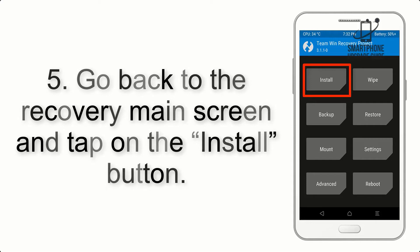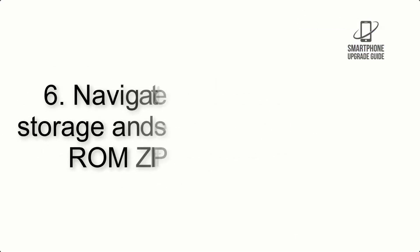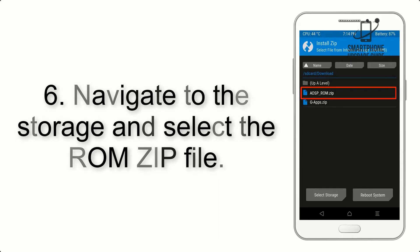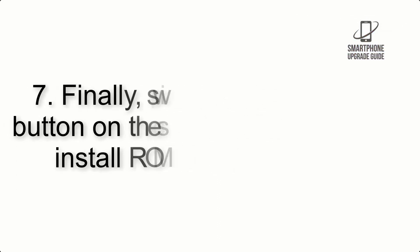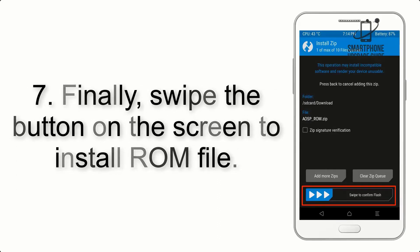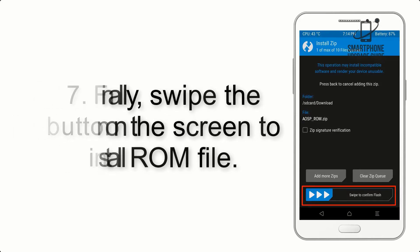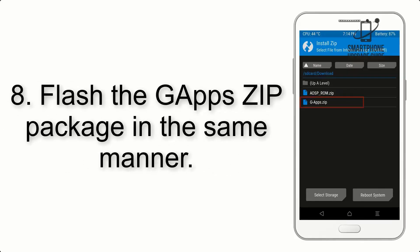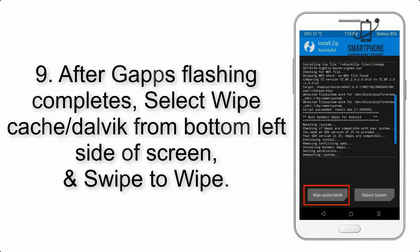Step 5: Go back to the recovery main screen and tap on the Install button. Step 6: Navigate to the storage and select the ROM zip file. Step 7: Swipe the button on the screen to install the ROM file.